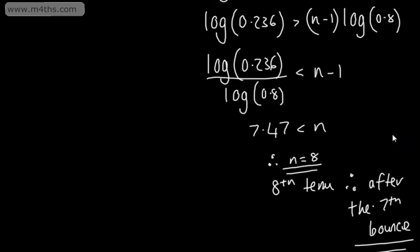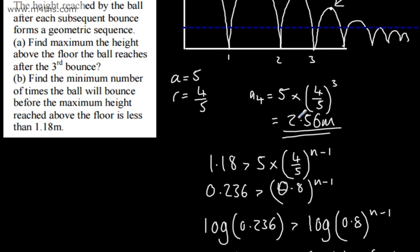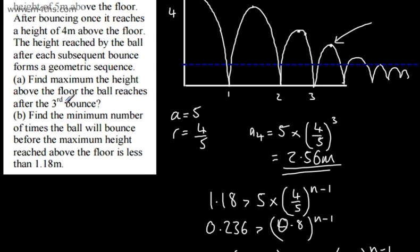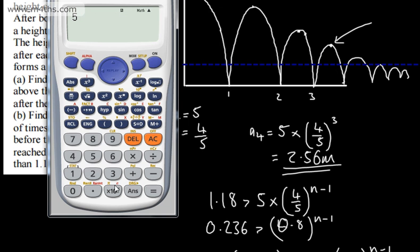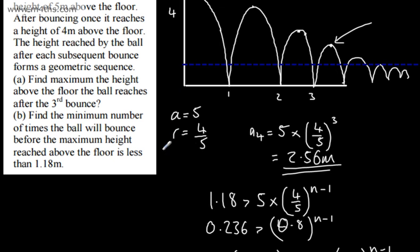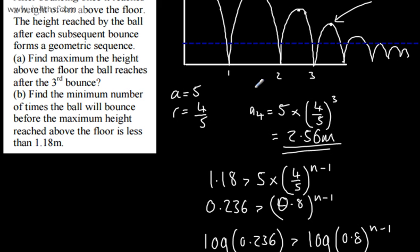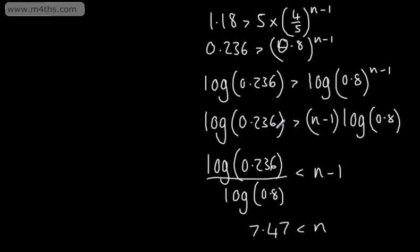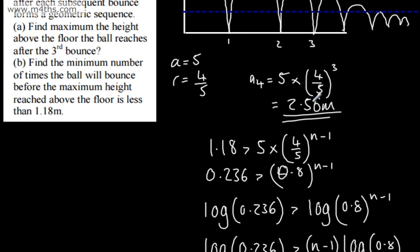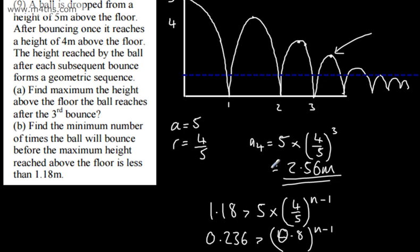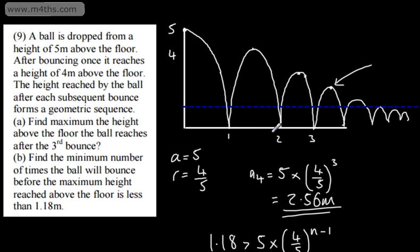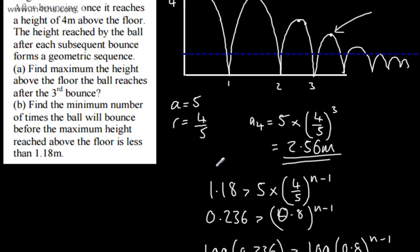Remember, I've chosen these terms such that the 8th term corresponds to the height reached after the 7th bounce. So after the 7th bounce, that is the minimum number of bounces such that the maximum height reached is less than 1.18 meters. These are discrete values for bounces, but using logs is far more effective, especially for messy numbers or later finance problems where the power is unknown. You can also use base 0.8 if you prefer — entirely up to you.